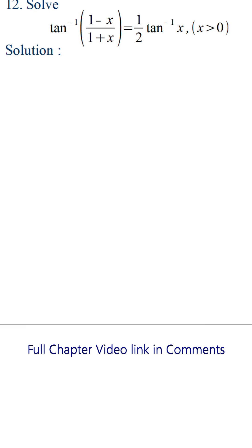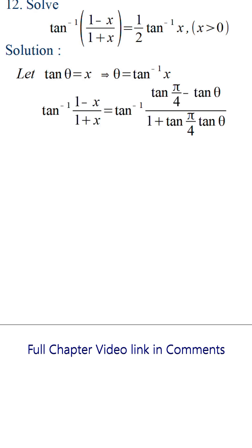Solve tan inverse of (1 minus x) by (1 plus x) is equal to half of tan inverse x, where x is greater than 0. Let tan theta equal x, or theta equal tan inverse x. Substituting this on the left hand side and also applying tan(π/4) equal to 1.